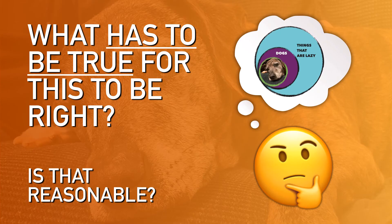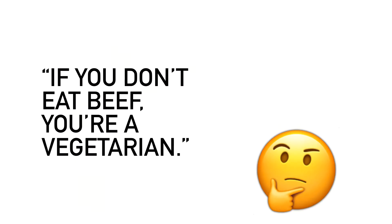The good news is that you can evaluate pretty much all deductive logic by asking yourself one question: what has to be true in order for this deduction to be right? You can expand that — how many steps does it take, and are all of those steps connected and reasonable? In the case of this argument, it had to be true that all dogs are lazy. Since we know that's not true, we can't believe that a dog is lazy just by virtue of being a dog.